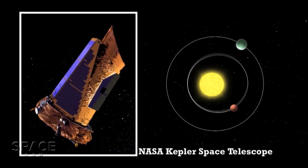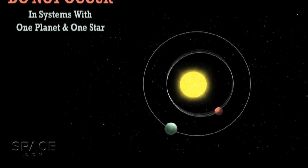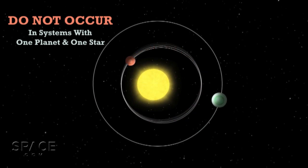Observations using the Kepler Space Telescope have confirmed that this variability does not appear in systems with one planet and one star.